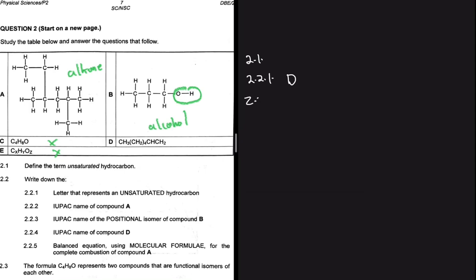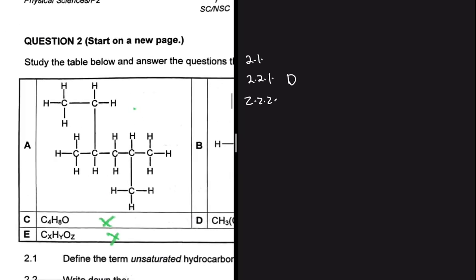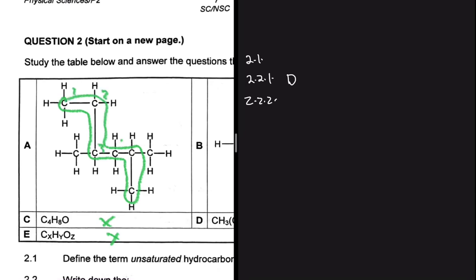For 2.2.2, let's write down the IUPAC name of compound A. We need to find the longest chain first. Counting along the longest chain gives us one, two, three, four, five, six carbons. Since compound A has six carbons and only single bonds, the parent chain is hexane.